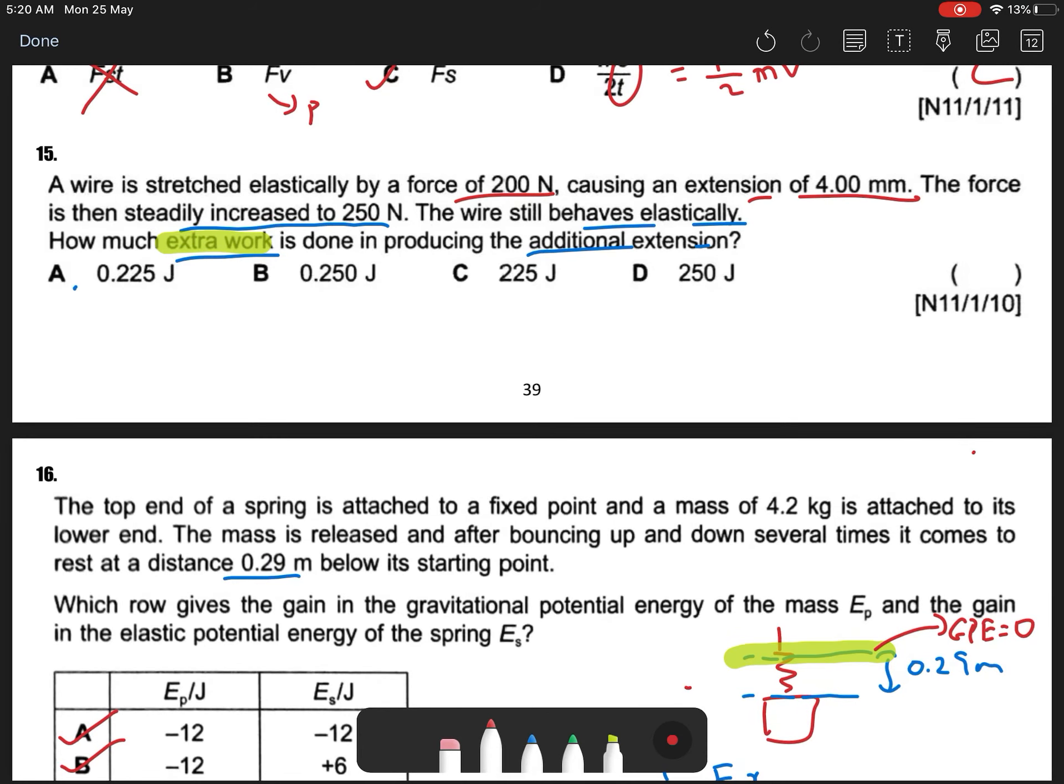Question 15: A wire is stretched elastically by a force of 200 newton, causing an extension of 4mm. So we have a force extension graph, right? We have 200 newton, we have extended of 4mm.